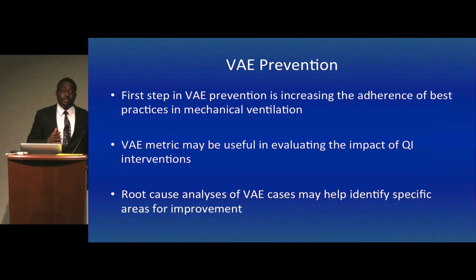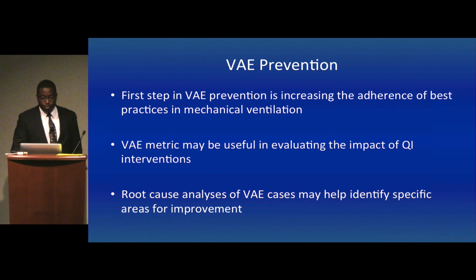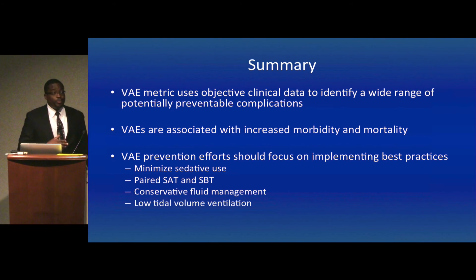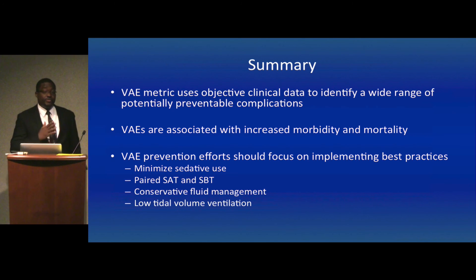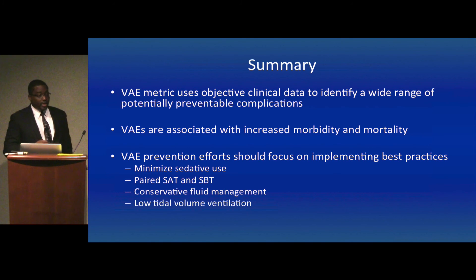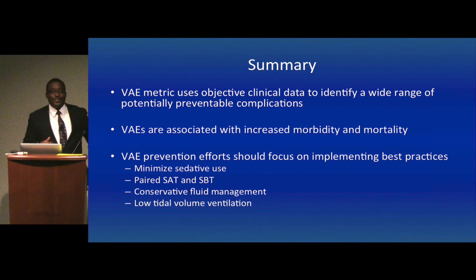Root cause analyses of VAE cases could help identify areas for improvement for individual ICUs and healthcare systems as a whole. In summary, the VAE metric uses objective clinical data to identify a wide range of potentially preventable complications, and VAE prevention is important because VAEs are associated with increased morbidity and mortality. VAE prevention efforts should focus on implementing best practices in mechanically ventilated patients.